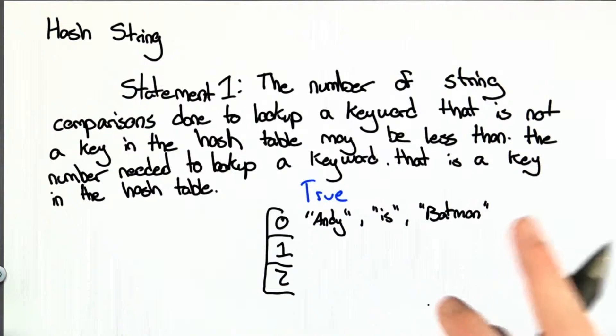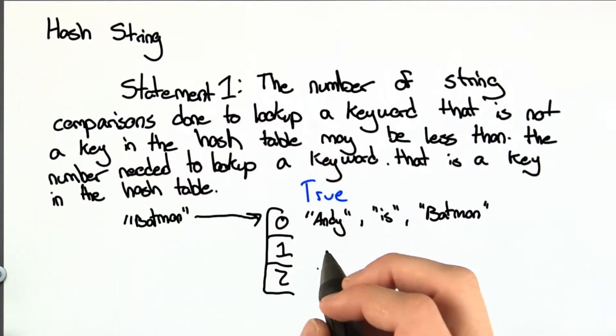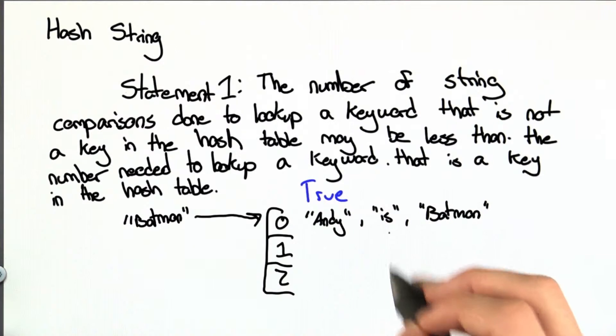I'm not showing the values because they don't really matter for this example. It could be the case that if we search for Batman, our hash function takes us to bucket 0, and then we have to compare between Andy, is, and finally Batman. So that would be three string comparisons.